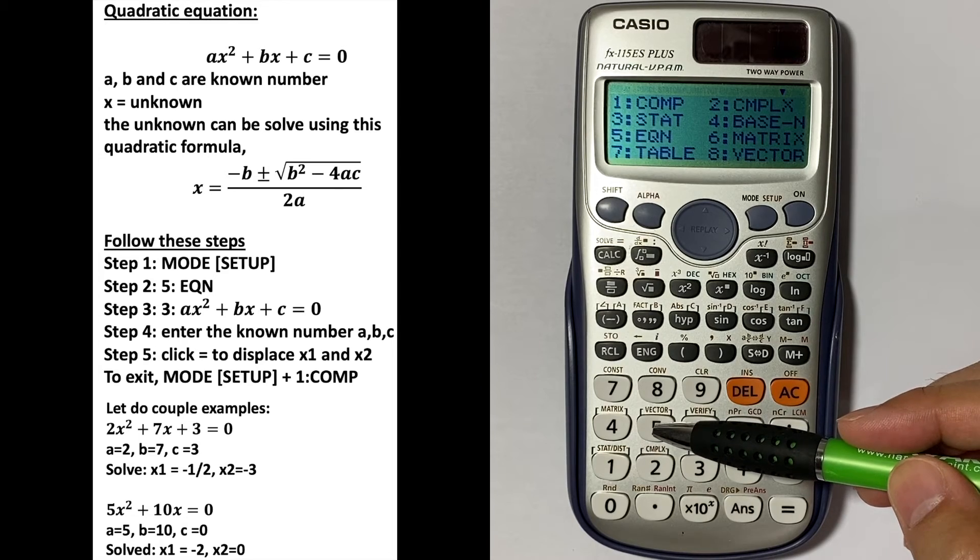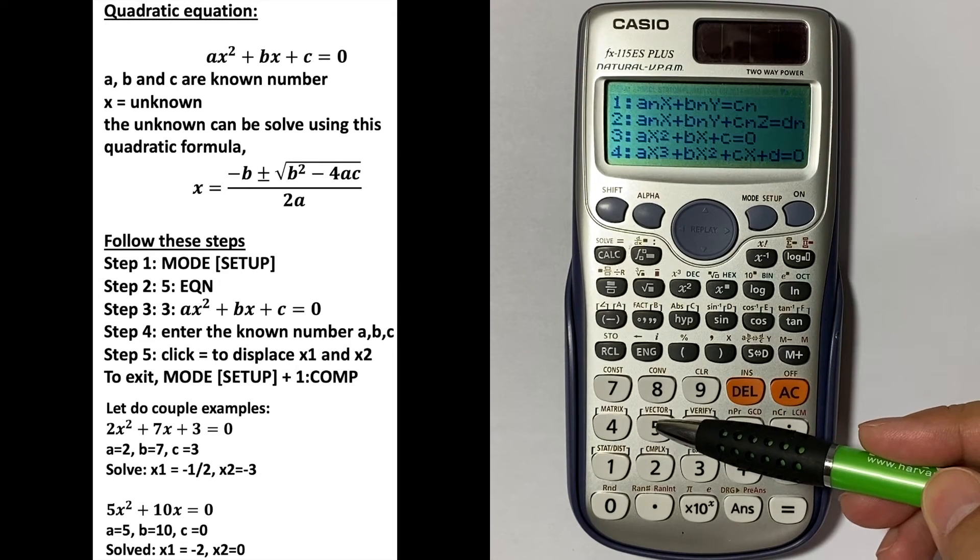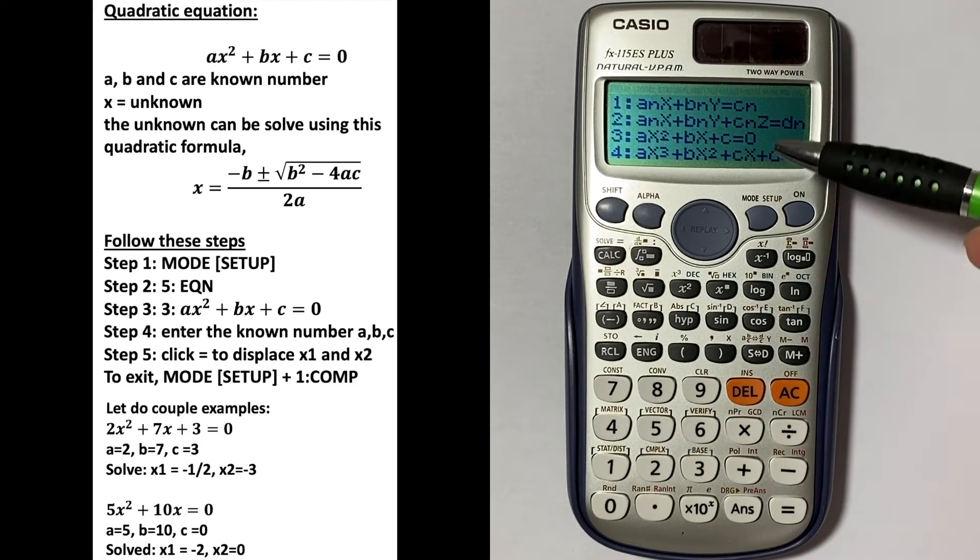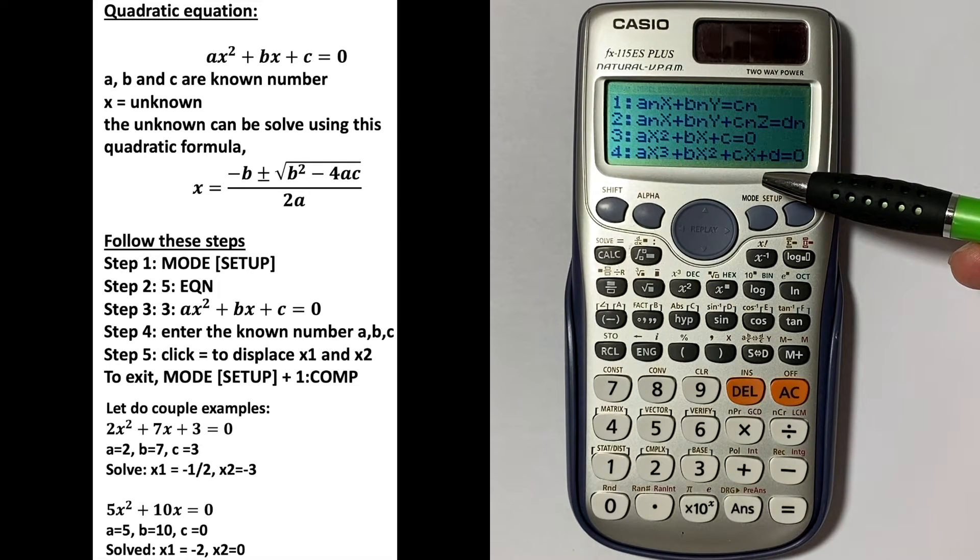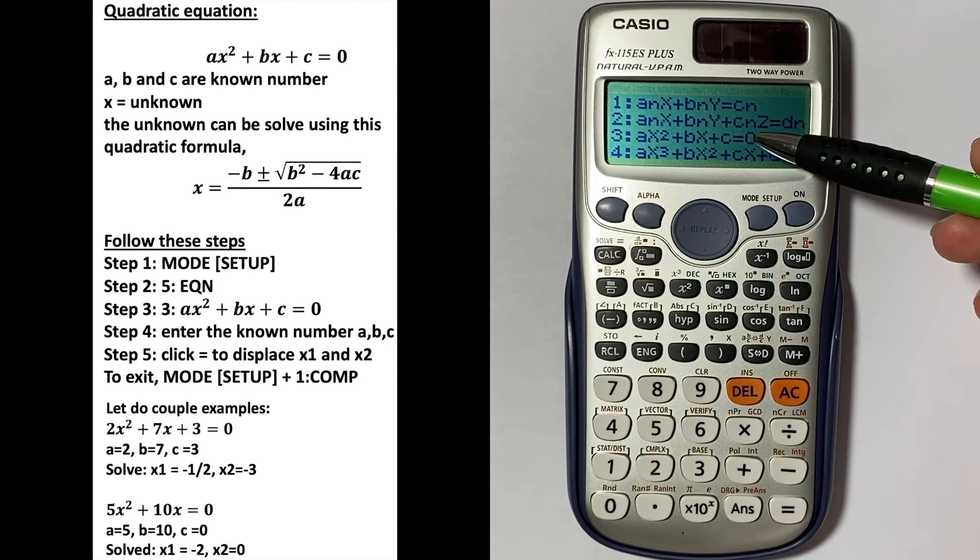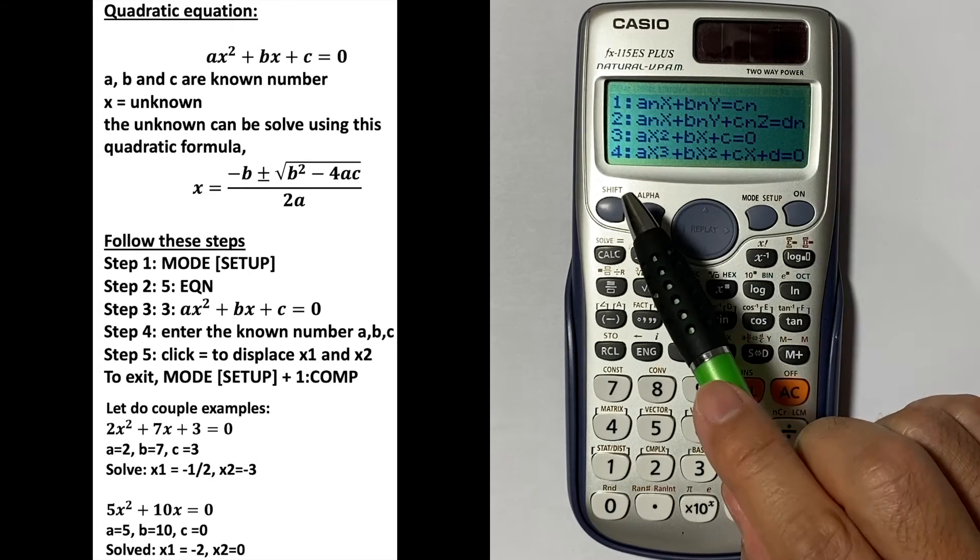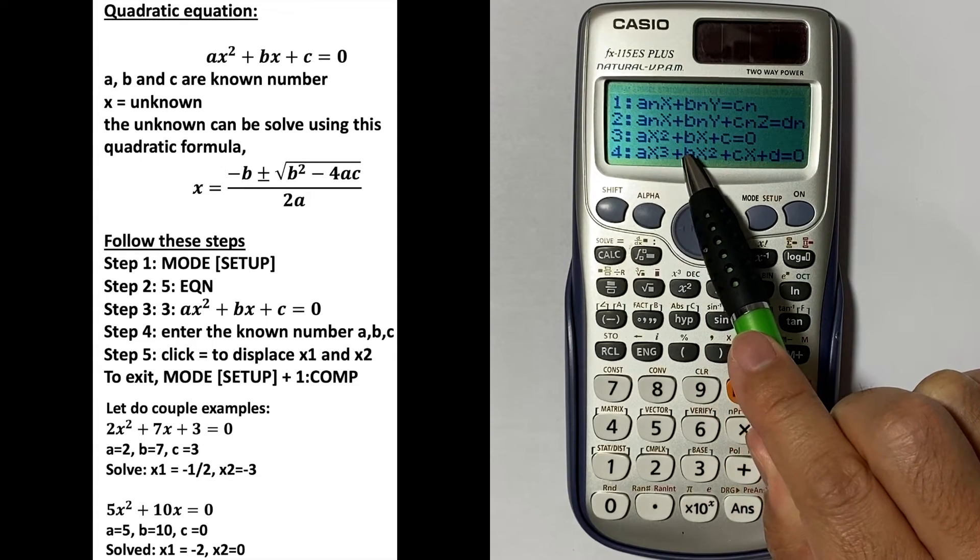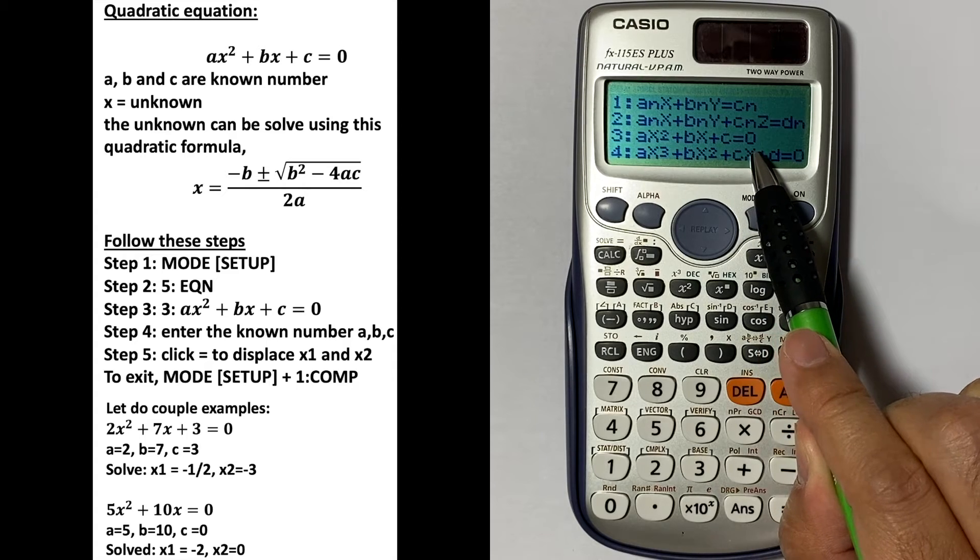Five, which is the equation right here. And then here you have four options, so we choose number three, which is the equation of x squared plus bx plus c equal to zero. This is a quadratic equation.